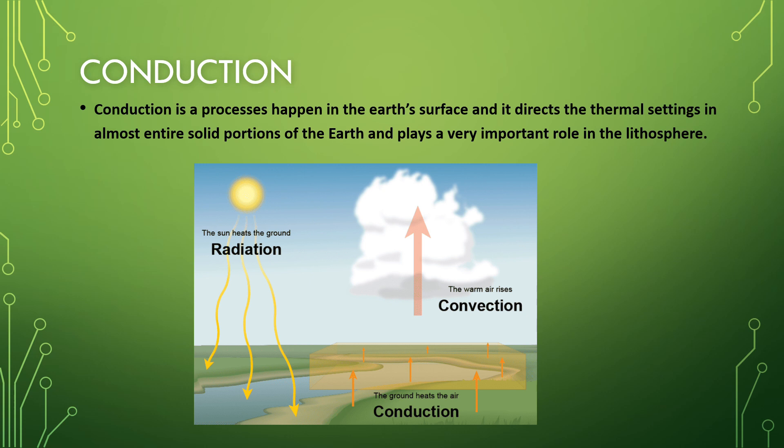When the atmosphere in normal temperature contacts with the warm surfaces of the land, it transfers thermal energy. Then, it will heat up the rest of the air through convection.